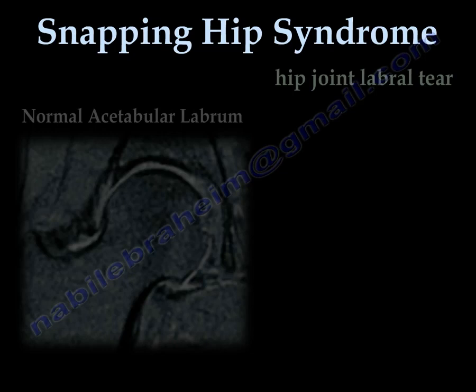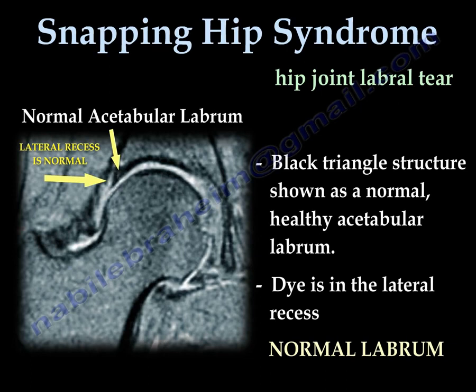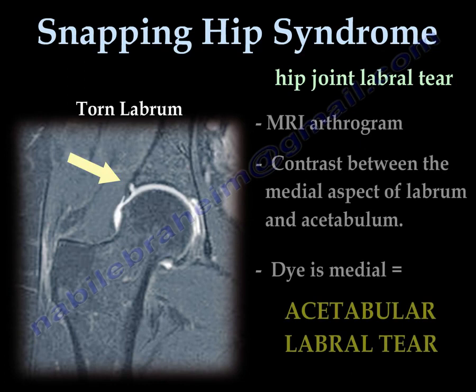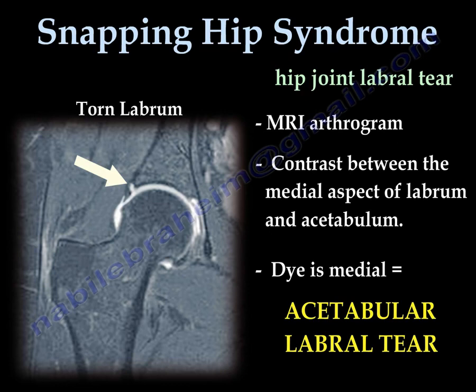The labrum is a black triangular structure, and lateral to it you find the lateral recess. Dye going there is normal and does not indicate a tear. When the dye is medial to that black triangular structure, then it is a tear. The MRI arthrogram is the best study to diagnose a labral tear.